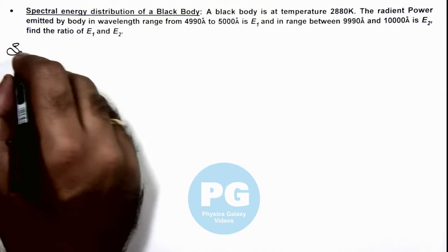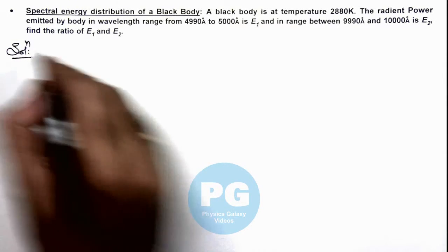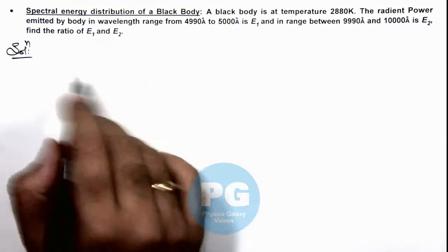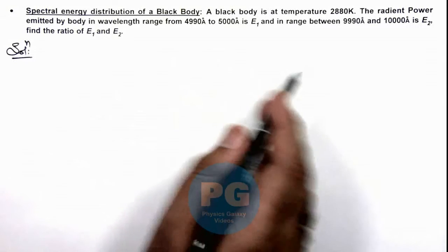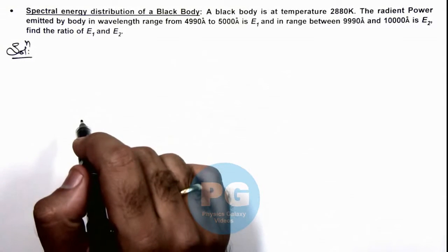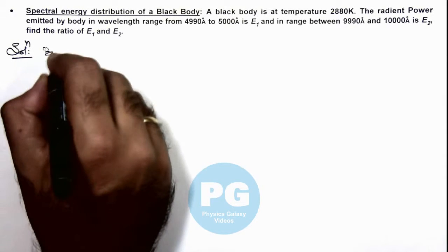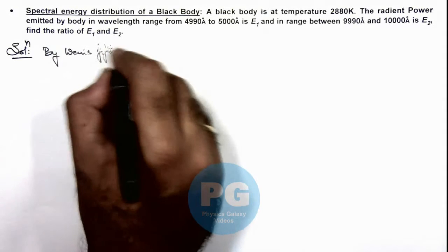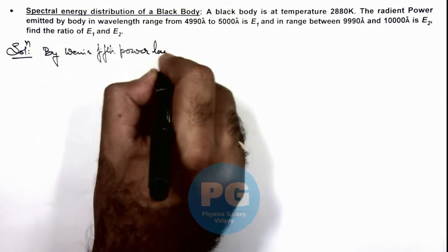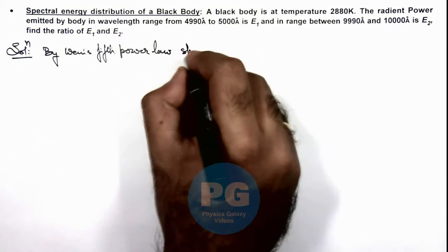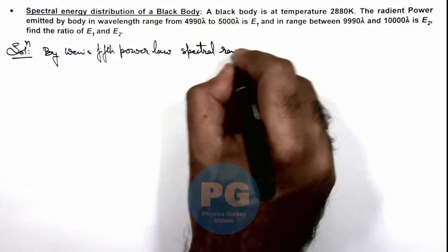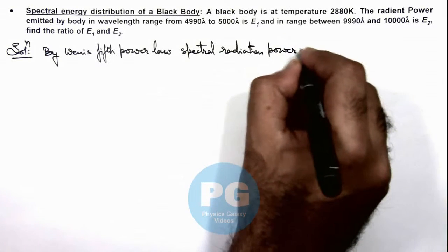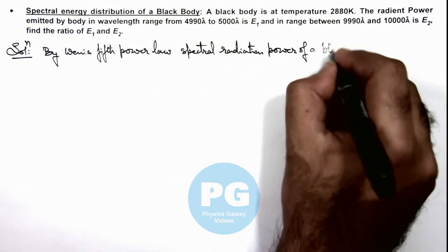So here first, we'll write down the spectral radiation power from a black body which is given by Planck's radiation theory, and as an approximation we derive Wien's fifth power law also. So here we can write by Wien's fifth power law spectral radiation power.